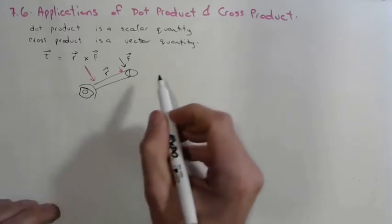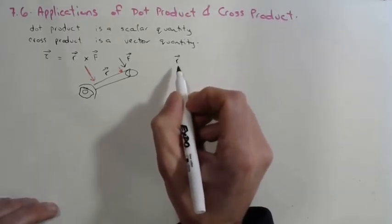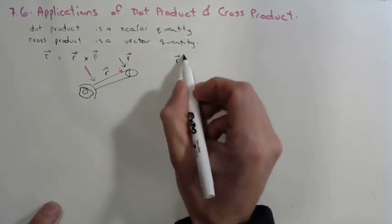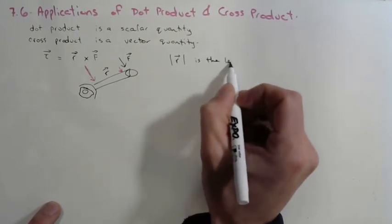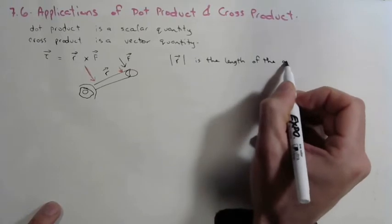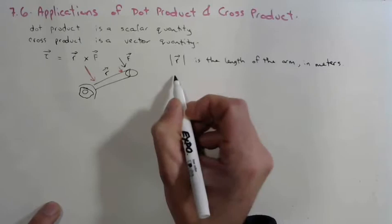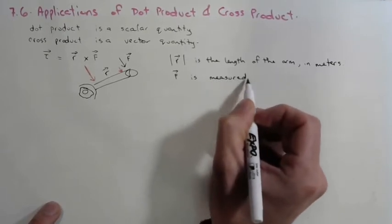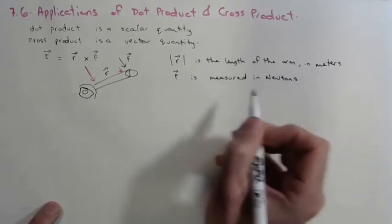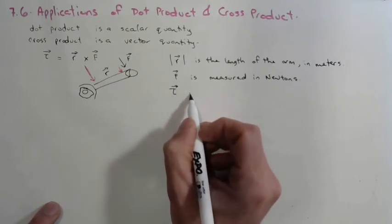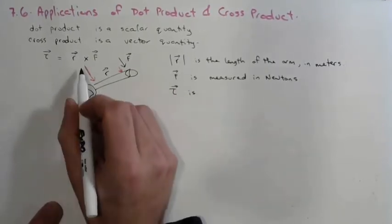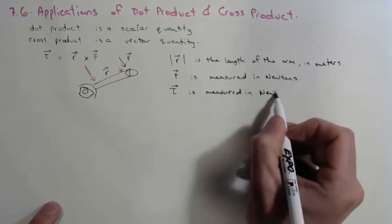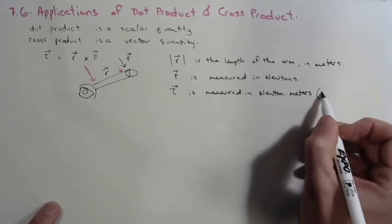R is a distance measured in meters — it represents the arm, the length of the arm. The force vector F is measured in newtons, just as we've been doing. And tau, the torque, is a vector measurement because it's a cross product, measured in newton meters, or N·m.